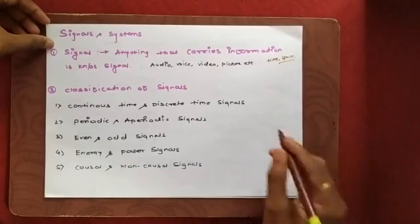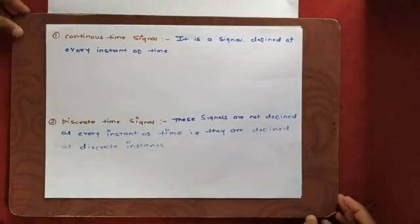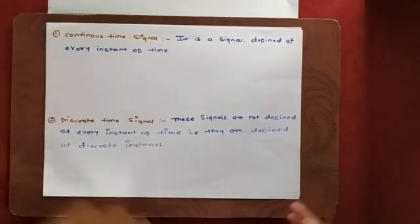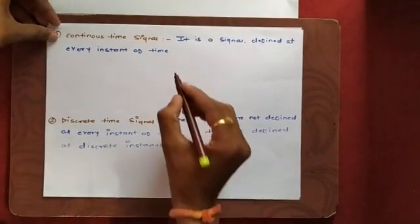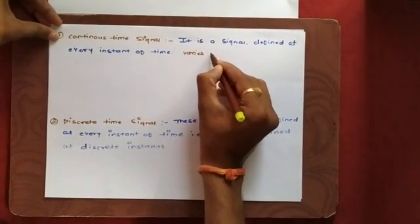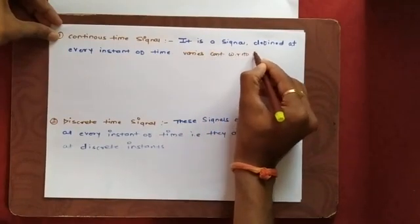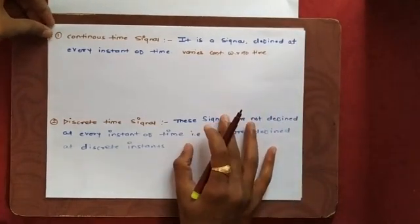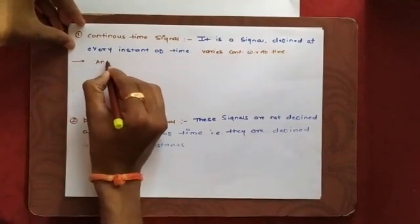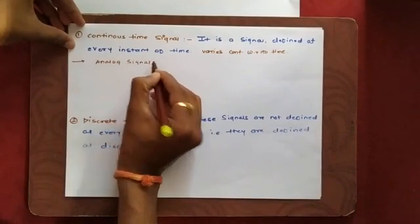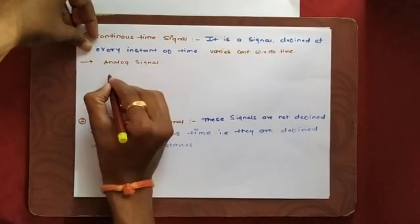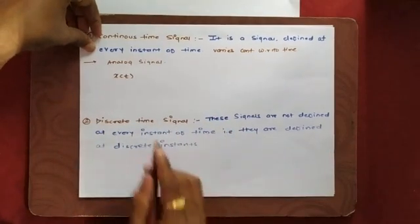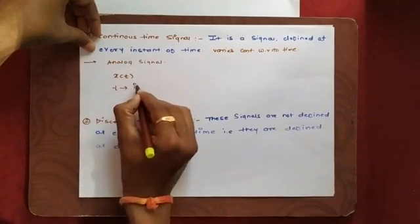First we will discuss about what is meant by continuous and discrete time signals. A continuous time signal is a signal that is defined at every instant of time. That means a signal which varies continuously with respect to time is known as a continuous time signal. These continuous time signals are also known as analog signals, as they vary for every instant of time. It is denoted as x(t), where t is the time period or independent variable.